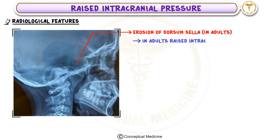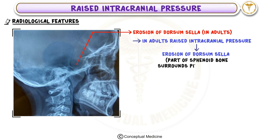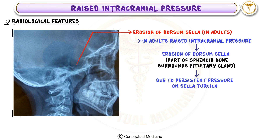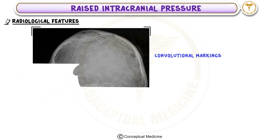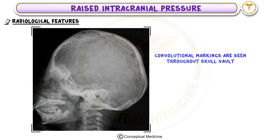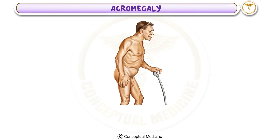In adults, raised ICP can cause erosion of the dorsum sella, which is part of the sphenoid bone surrounding the pituitary gland. This erosion occurs due to persistent pressure on the sella turcica. Convolutional markings are seen throughout the skull vault, giving a copper beaten skull appearance.